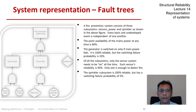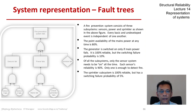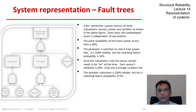Finally, the sprinkler subsystem is fully reliable, but just like the diesel generator, it has a switching failure probability of 5%. Switching failure means that when it is asked to come online, if the switch doesn't work properly, it is not able to perform that function and the system effectively fails.